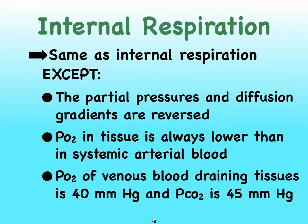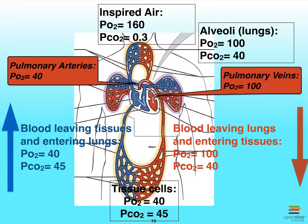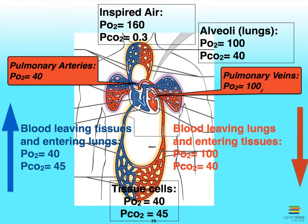Let's take a look at our figure. So after gas exchange has occurred at the level of the lungs — remember we refer to that as external respiration — our blood has become oxygenated, so that we are now at a partial pressure for oxygen of about 100. And if we add our partial pressure for carbon dioxide in our pulmonary veins, it's going to be at 40.